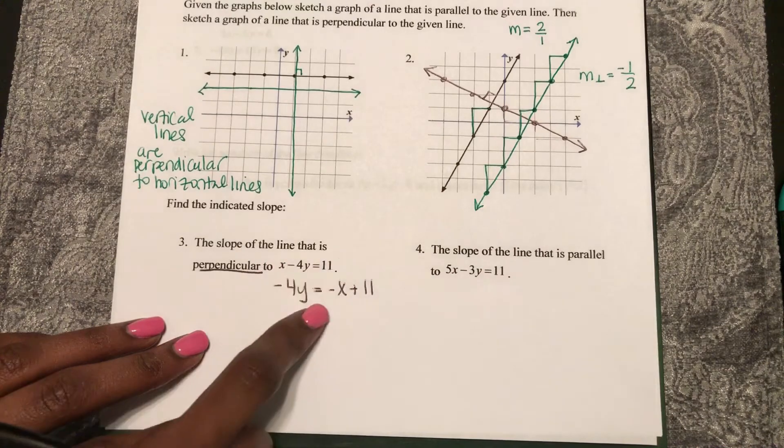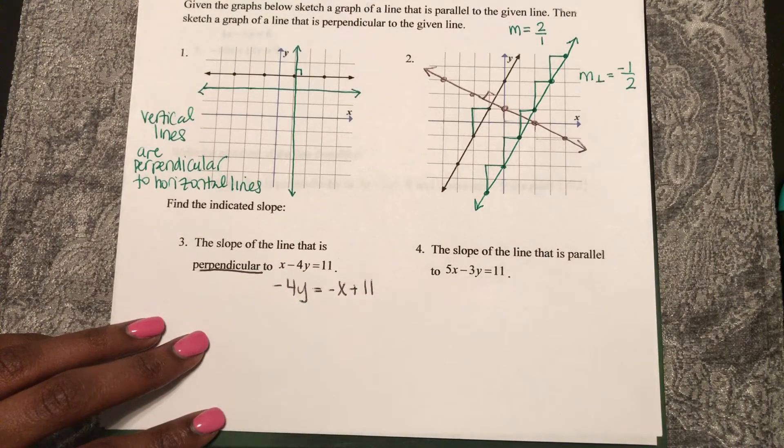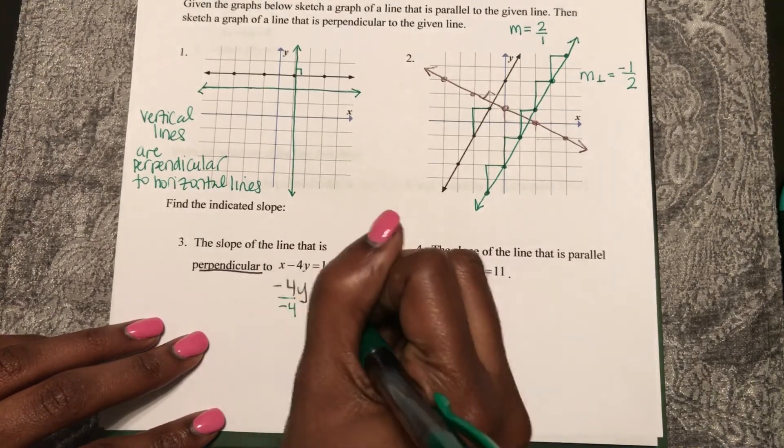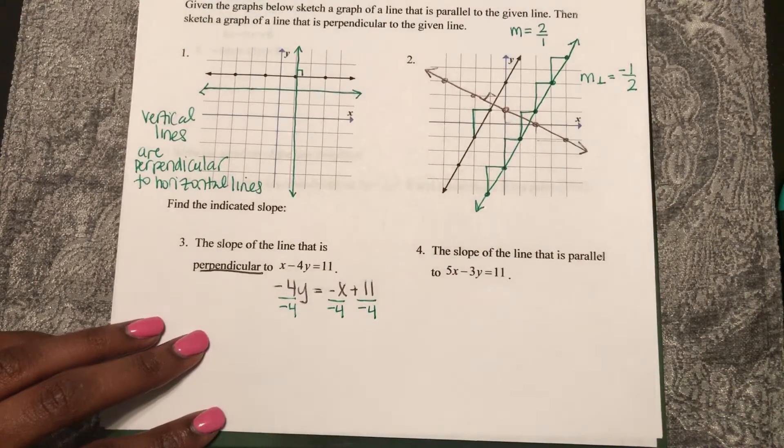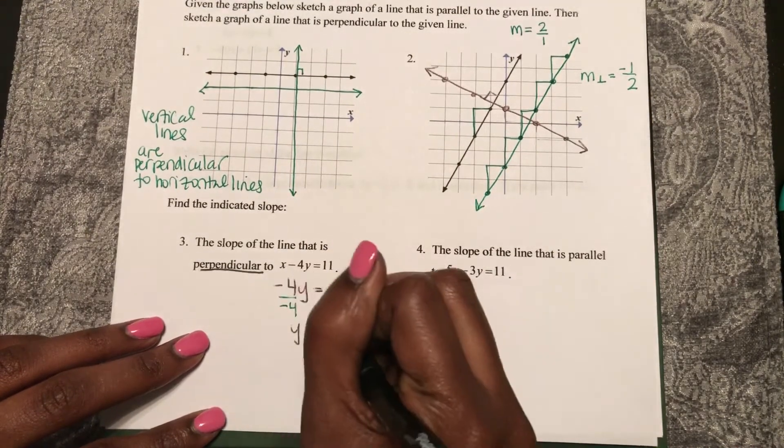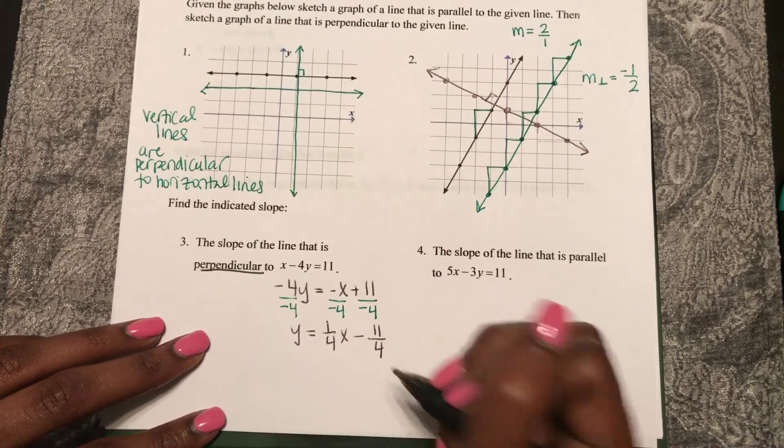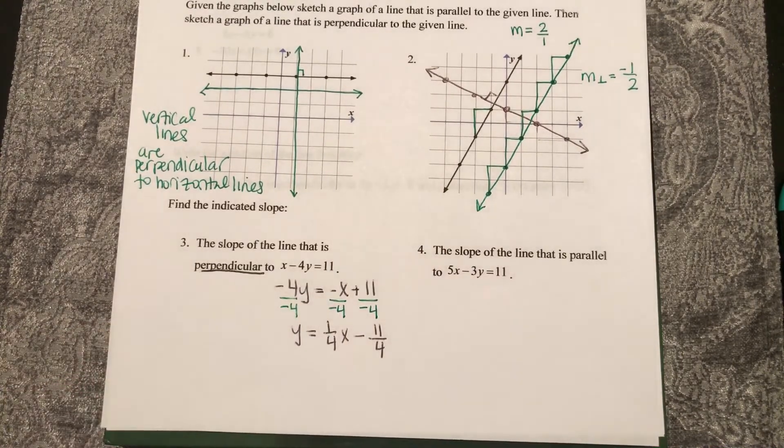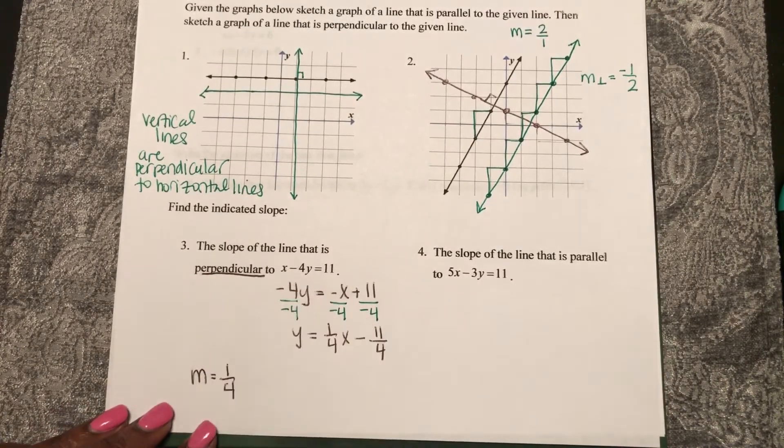So since I subtracted it, that's how it becomes negative. Then I will divide each term by negative 4. So now I have y equals 1/4x minus 11 over 4. So the slope of this line equals 1/4.